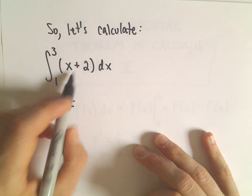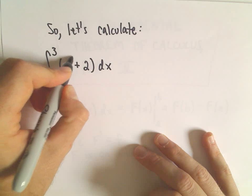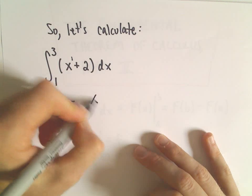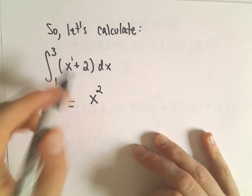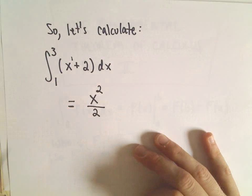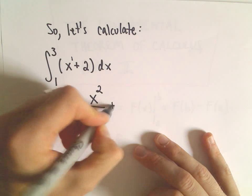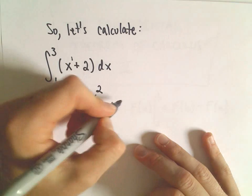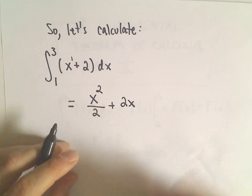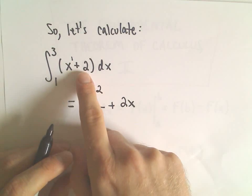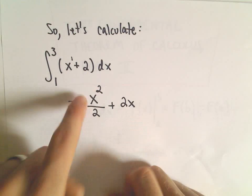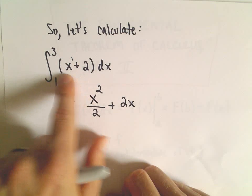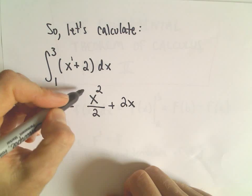Well, the first thing we have to do is find an antiderivative of x to the first. And what we do when we have x to a power is we add 1 to that power, so I'm going to get x to the second, and then divide that by 2, and then I need to find an antiderivative of the constant 2. Well, 2x would be an antiderivative of the constant 2, and you can always check you have a correct antiderivative by simply taking the derivative, and you should get back your original function back.